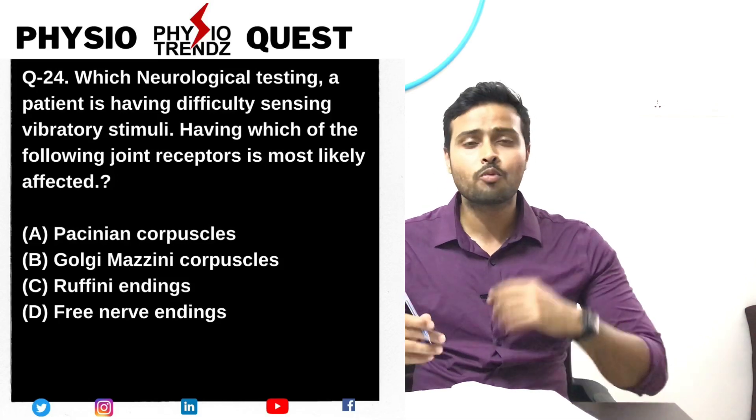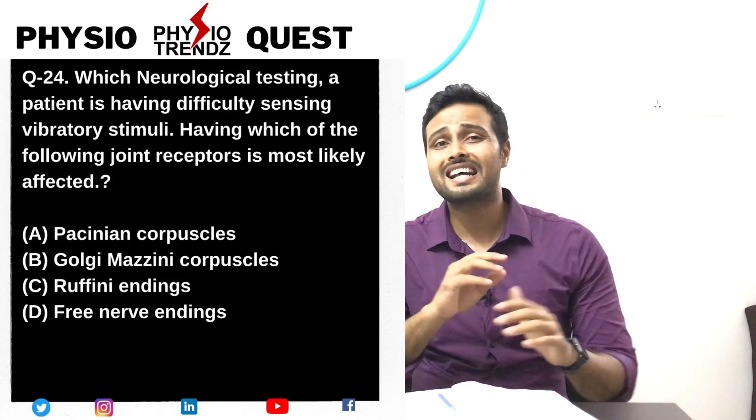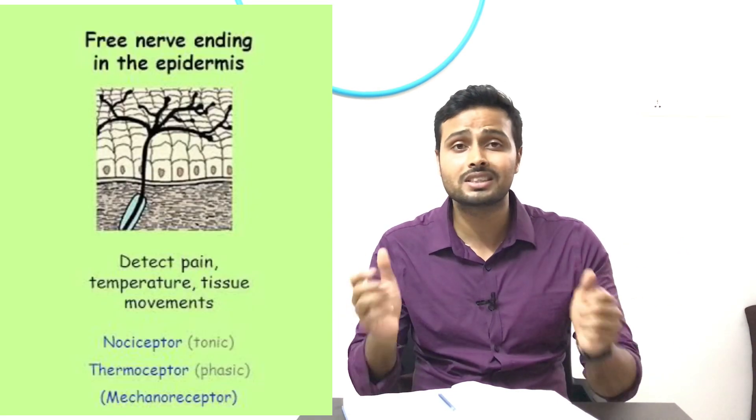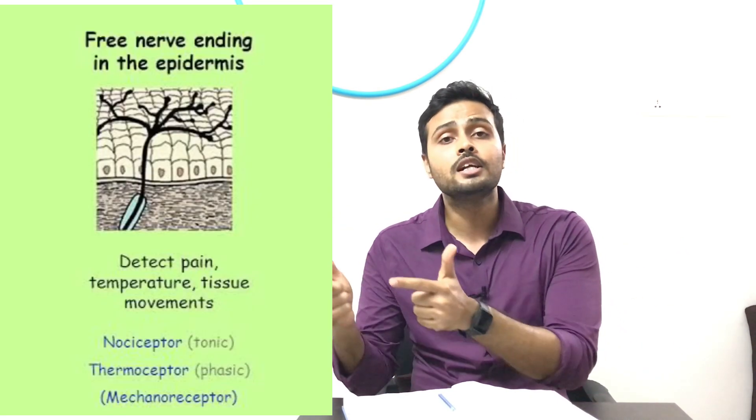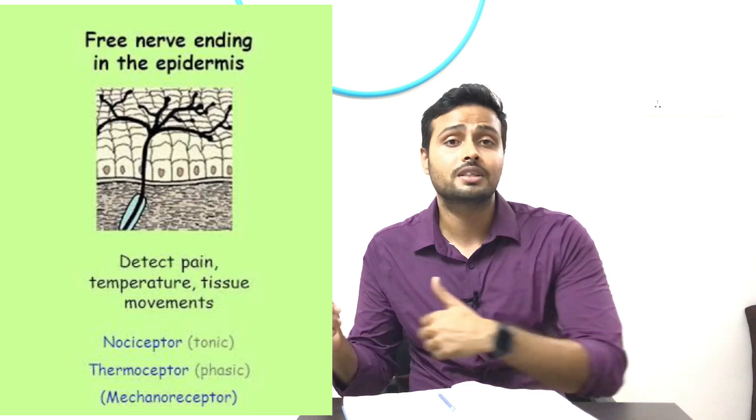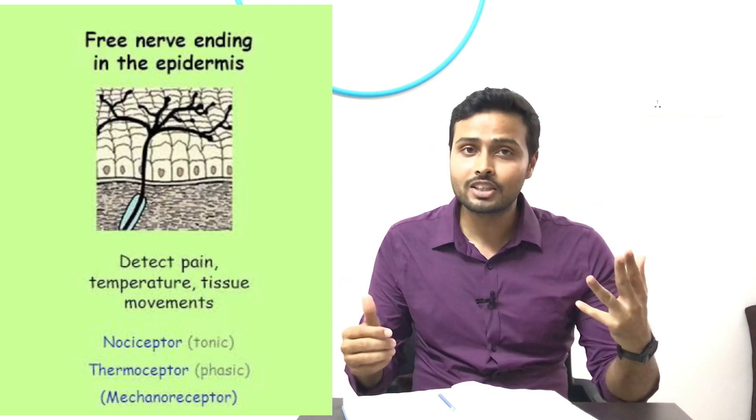Looking at the options, we can directly eliminate free nerve endings because free nerve endings have nothing to do with vibrations — they directly deal with pain, touch, and temperature. For the remaining three, let's look at Ruffini endings.